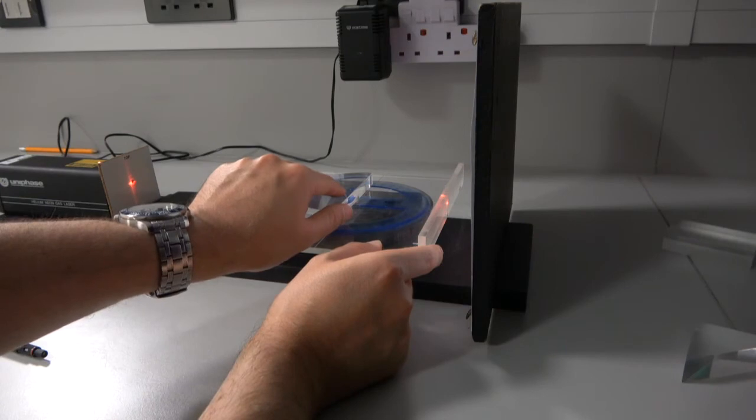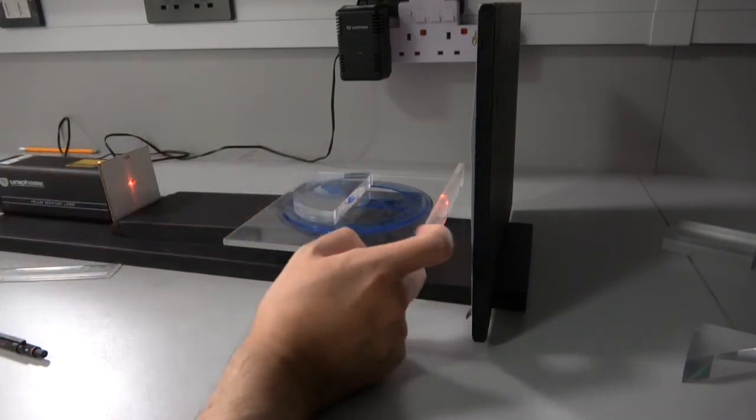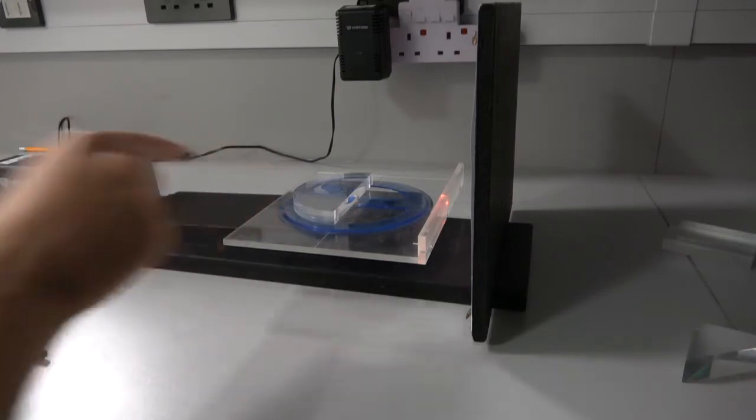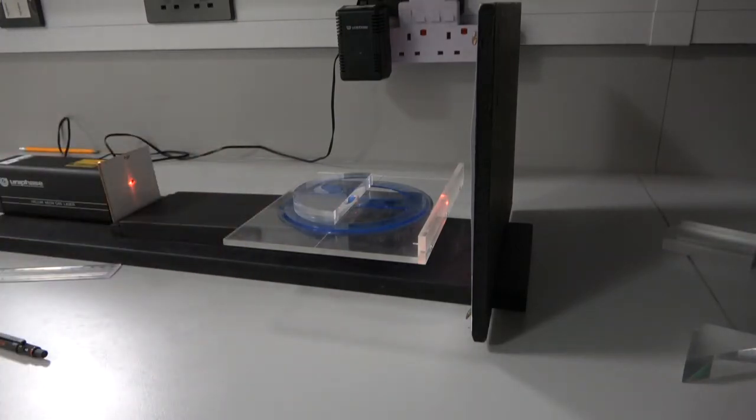So this should be set up so that the laser beam is now perpendicular to this protractor. And with that being the case, I'm going to take a photo of the zero position of the protractor.